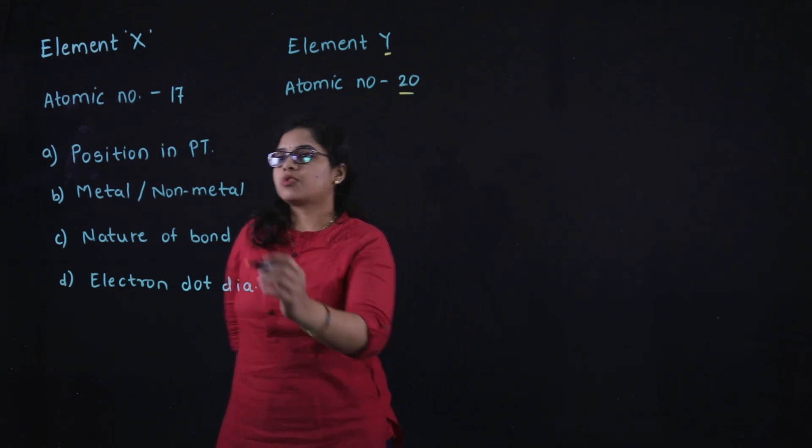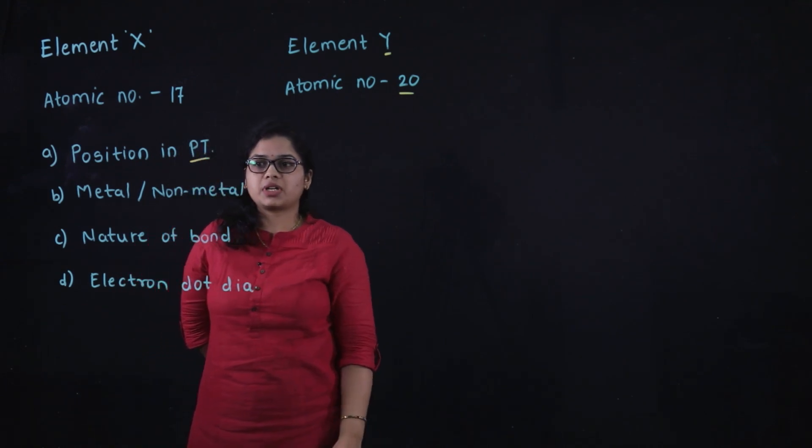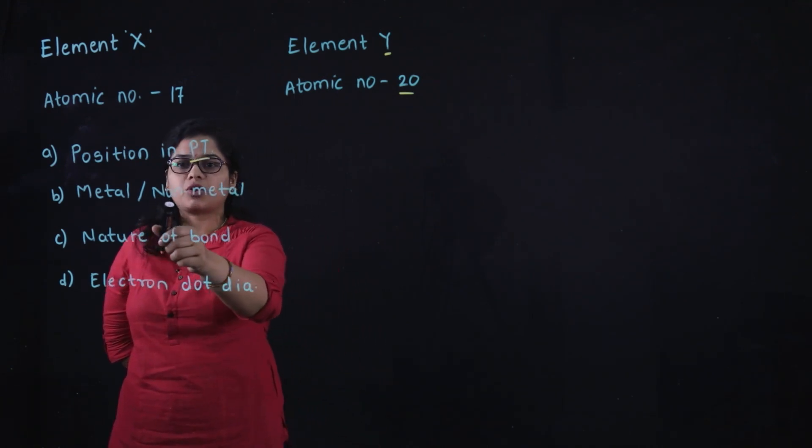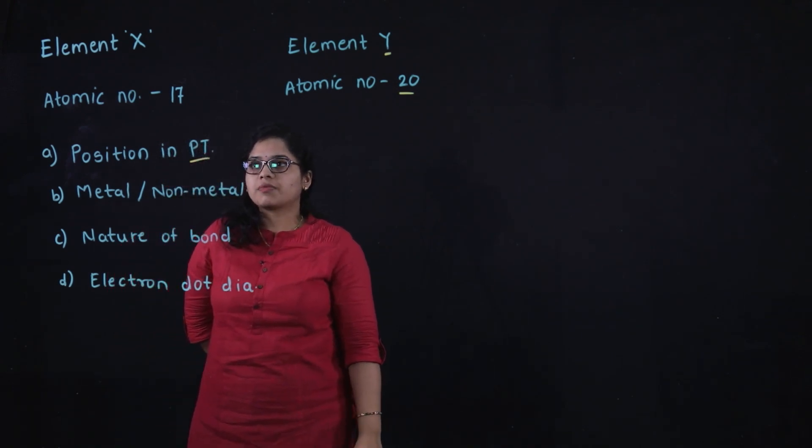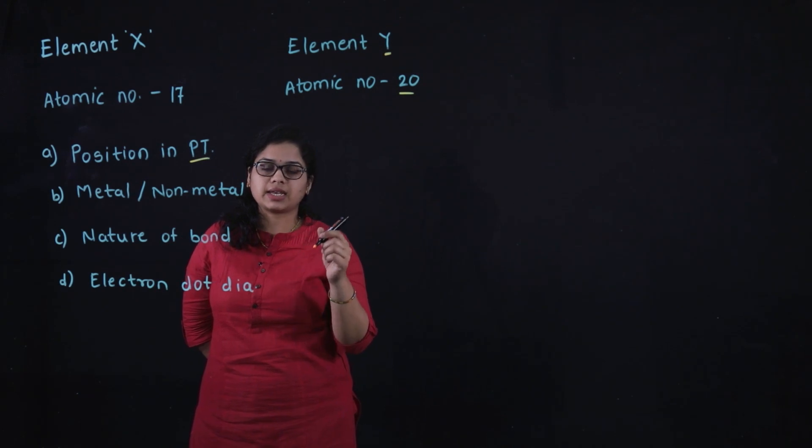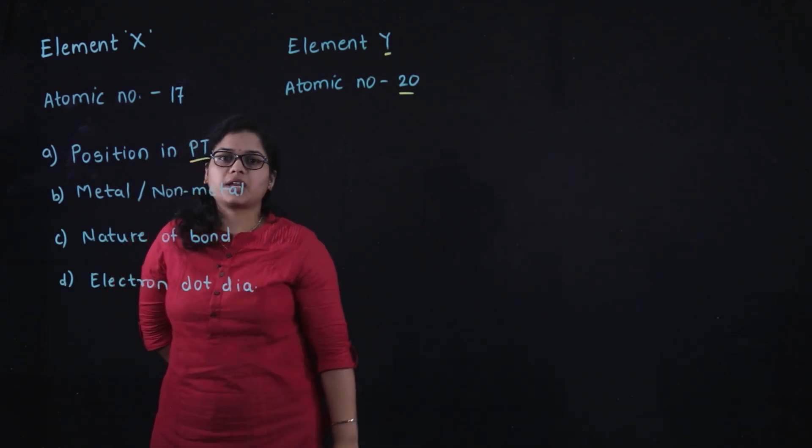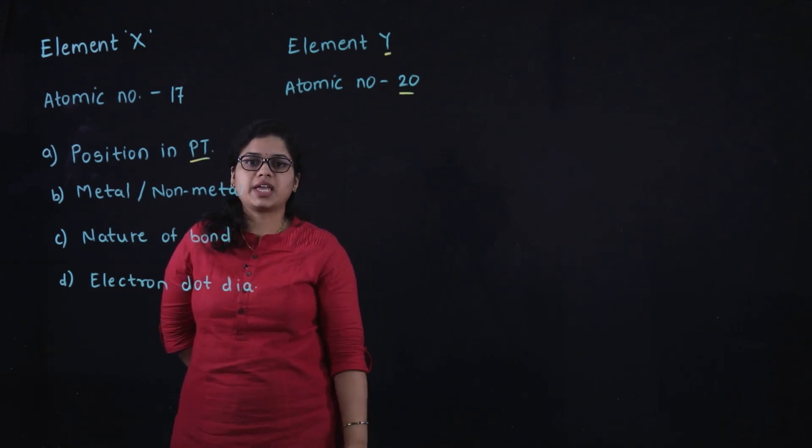We have to determine the position of X and Y in the periodic table, whether X and Y are metal or non-metal, and the nature of bond formed between element X and element Y. Also we have to draw the electron dot diagram of the compound formed between X and Y.